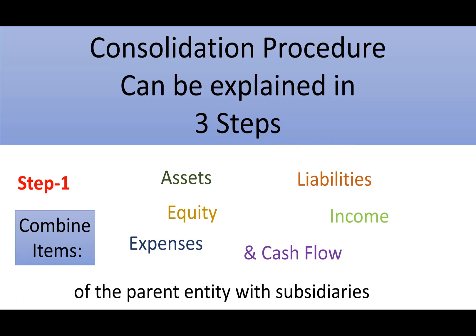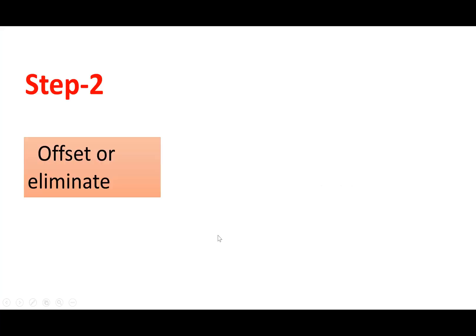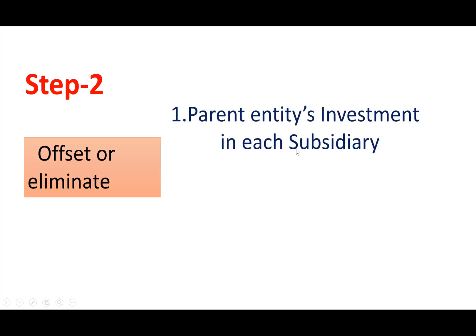Step two involves working out the elimination process. The basic requirement is that this is a simple combination on a line-by-line basis for the parent–subsidiary's presentation at the reporting date. Whether the parent owns 100% or less than 100% — more than 50% — we deal with minority interests or non-controlling interests. Step two: offset or eliminate the parent entity's investment in the subsidiary.